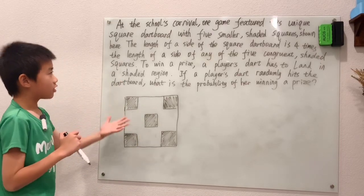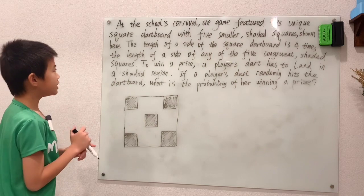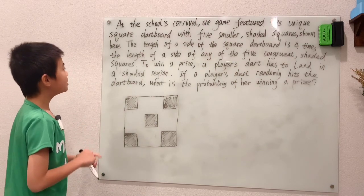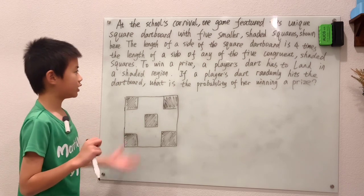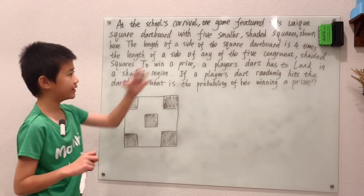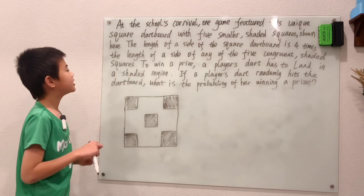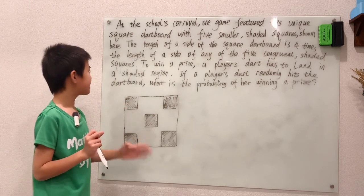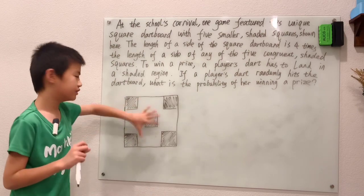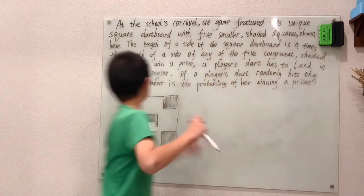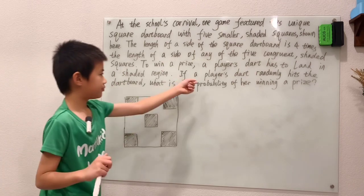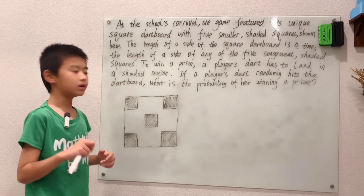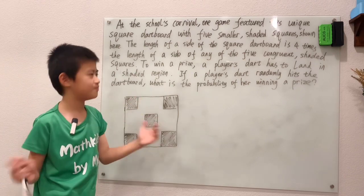At the school's carnival, one game featured this unique square dartboard with five smaller shaded squares shown here. The length of the side of the square dartboard is four times the length of the side of the five congruent shaded squares. To win a prize, a player's dart has to land in a shaded region. If a player's dart randomly hits the dartboard, what is the probability of her or him winning a prize?